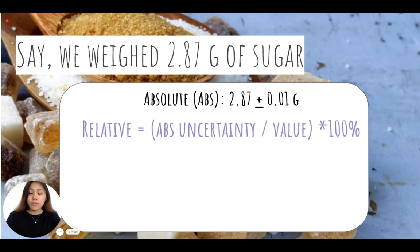The formula to remember is: relative uncertainty equals the absolute uncertainty divided by the value, times 100%. This is a formula you will have to remember, and it'll get easier as you do more of it.